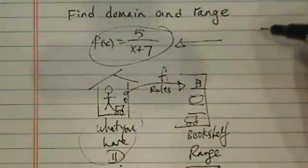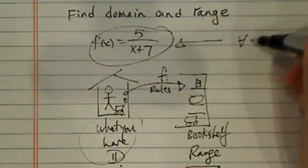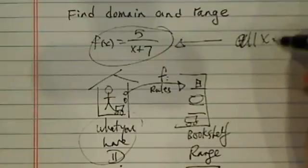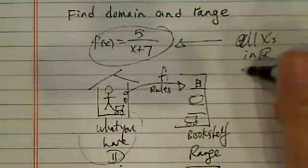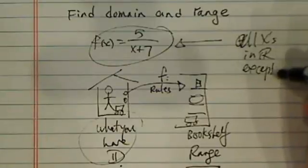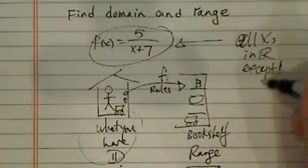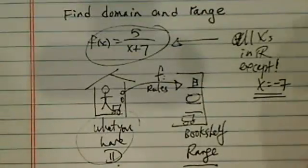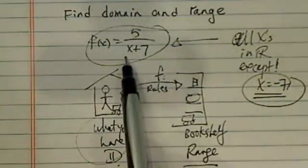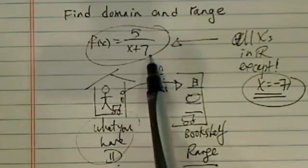What x is good? All the x except, so let's write it out, all x that's in the real domain or real numbers, except there's one. Can you spot it? Except x equal to minus 7. Because this is one bad x in that when I have a minus 7 on the bottom, I have minus 7 plus 7, that's 0.